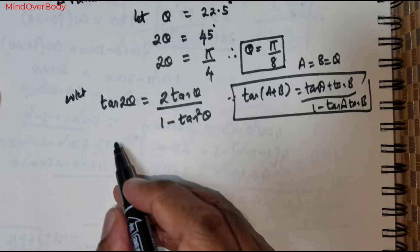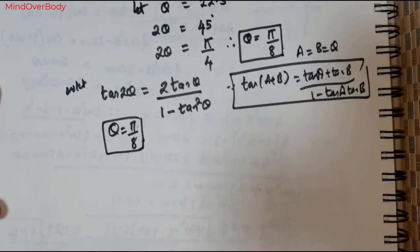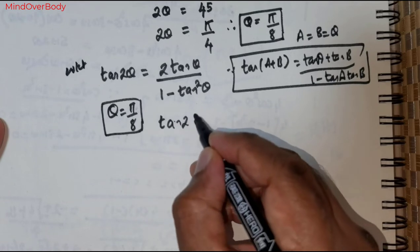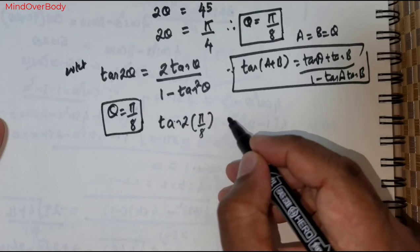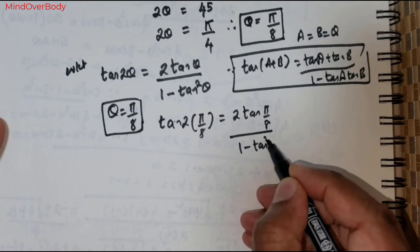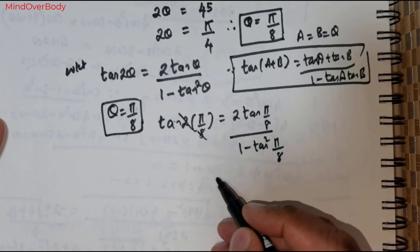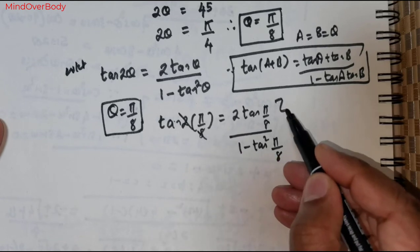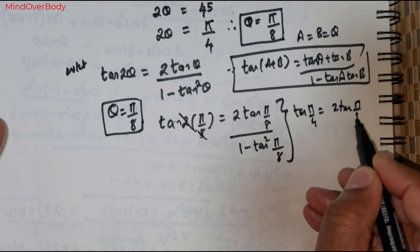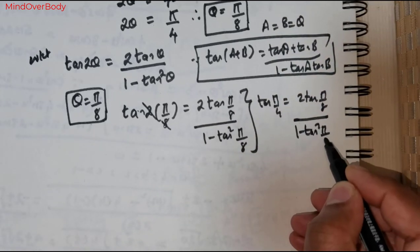What I wish to do now is substitute theta equal to pi over 8. So this becomes tan of 2 times pi over 8, equal to 2 times tan(pi over 8) divided by 1 minus tan squared of pi over 8. Since 2 divides 8 four times, the left side simplifies to tan(pi over 4), equal to 2 tan(pi over 8) over 1 minus tan squared(pi over 8).